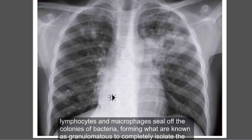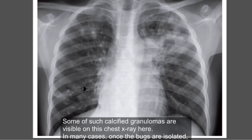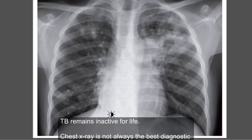Eventually macrophages die off and disease can progress. Some of the neutrophils, lymphocytes, and macrophages seal off the colonies of bacteria, forming what are known as granulomas, to completely isolate the infection. Later on, granulomas may become calcified, and some of such calcified granulomas are visible on this X-ray. In many cases, once the bugs are isolated, TB remains inactive for life.